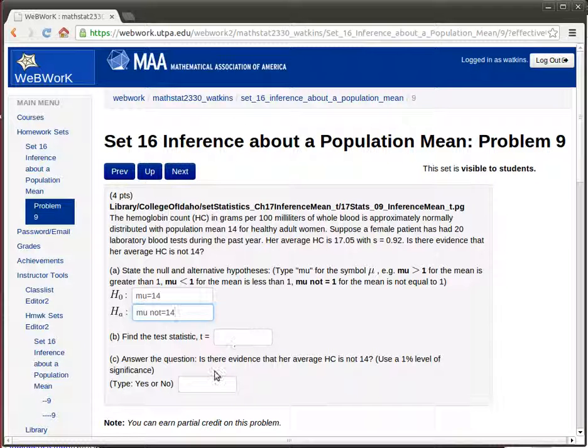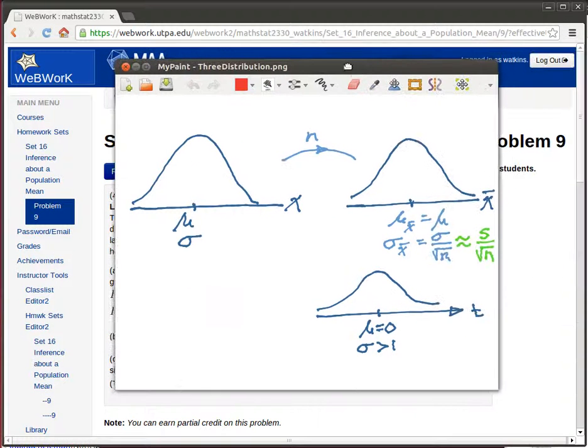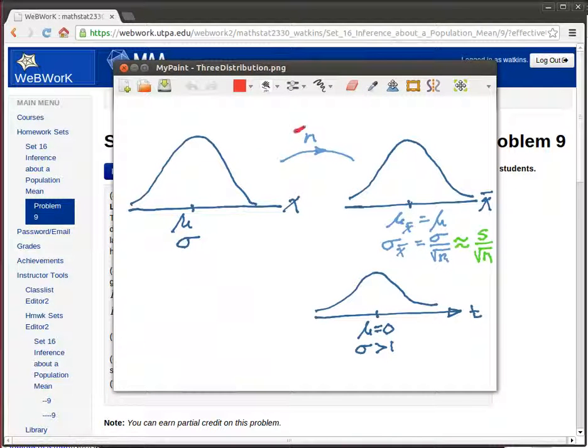So we need to find a test statistic and make some decisions about that. Let's begin to look at some of the evidence here. We've got how many tests were done here, it looks like there's 20, so that's the sample size. So here we are with the sample size of 20.